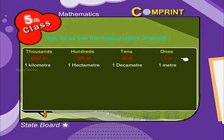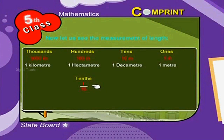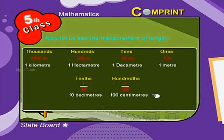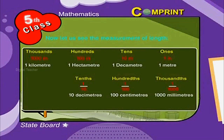One meter. Ten decimeters is equal to one meter. One hundred centimeters is equal to one meter. One thousand millimeters is equal to one meter.